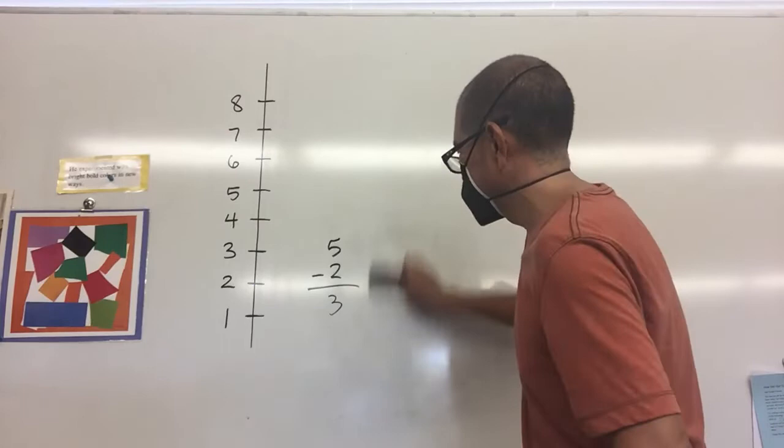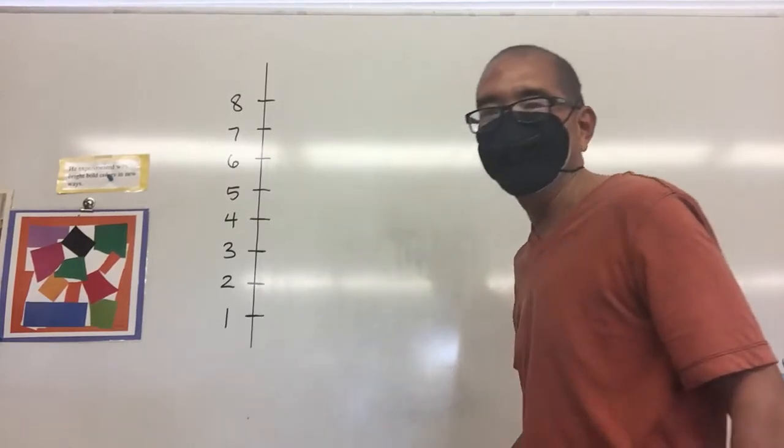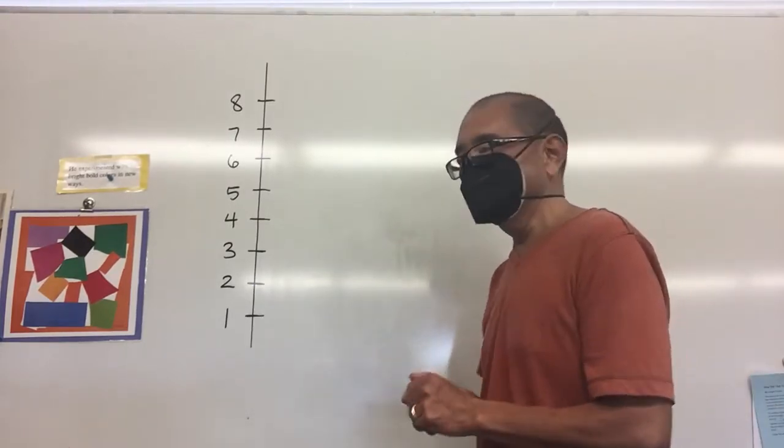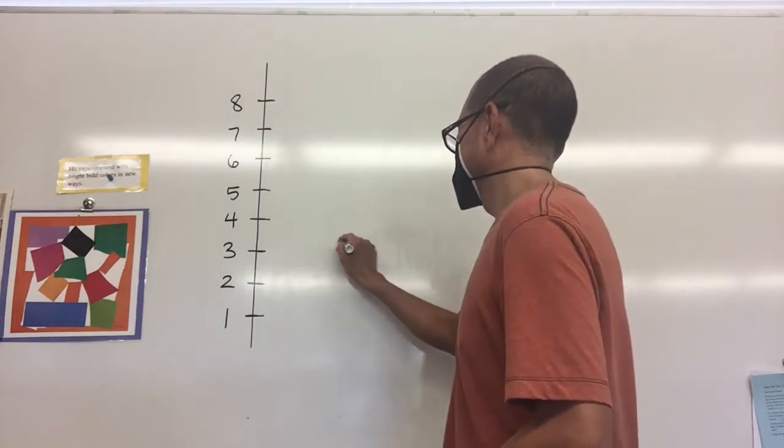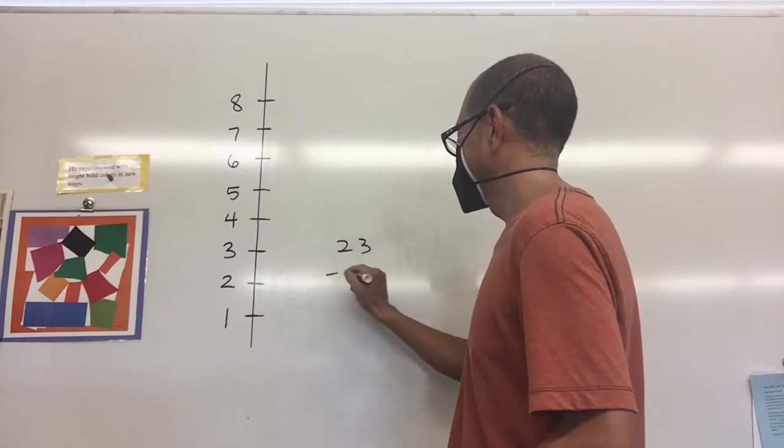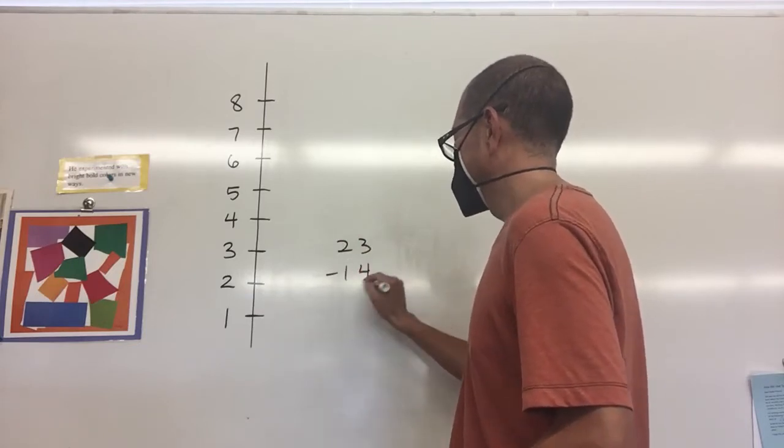If you can understand that when you subtract you're actually finding the space in between those two numbers, then this new method of subtraction will make sense. Let's say we have 23 minus 14.